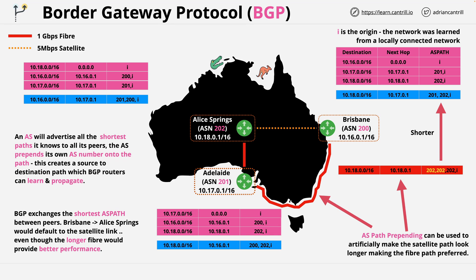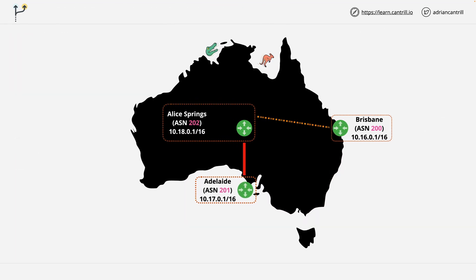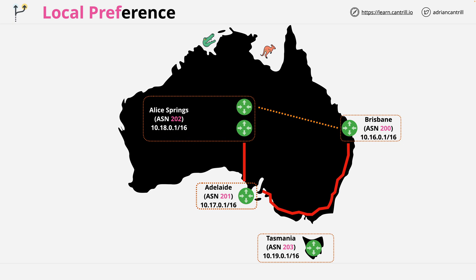Let's start with local preference and add some complexity. The first change is adding an extra router at the Alice Springs site — it's become more important to the business. The top router has the connection to Brisbane, and the bottom router has the connection to Adelaide. We've also added an entirely new site, Tasmania, connected via a link from Brisbane, as well as a shorter link from Adelaide. Alice Springs has also been restructured, adding an extra set of routers designed for routing within the autonomous system.